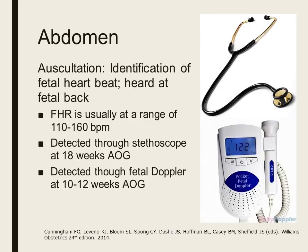We also do auscultation of the maternal abdomen to check for the fetal heartbeat. We use LM2 to determine which side is the fetal back, because that is the area where we can hear the fetal heartbeat. The fetal heart rate is usually in the range of 110 to 160 beats per minute. We can detect this through a stethoscope starting at 18 weeks AOG, and earlier using a fetal Doppler at around 10 to 12 weeks AOG.